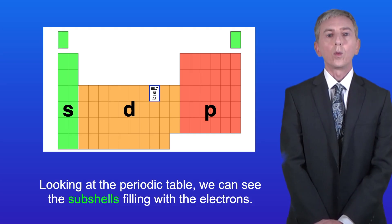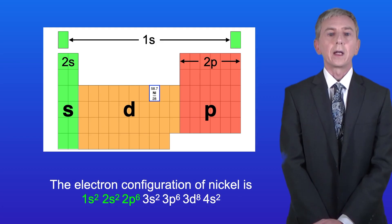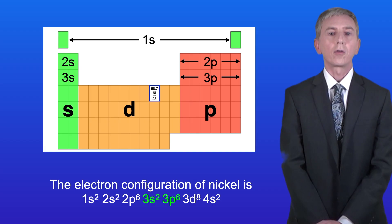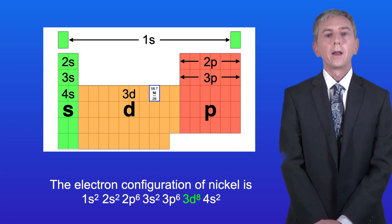Looking at the periodic table, we can see the subshells filling with the electrons. These represent the electrons in the 1s, 2s, and 2p subshells. Next, we have the electrons in the 3s and 3p subshells. Then we have the electrons in the 4s subshell. And lastly, we have the electrons in the 3d subshell.